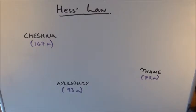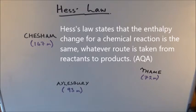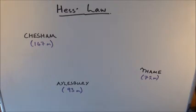For the exams, you must learn Hess's Law as defined by your own examination board. From an OCR textbook: Hess's Law states that if a reaction can take place by more than one route and the initial and final conditions are the same, the total enthalpy change is the same for each route. A good example is when a catalyst is used — a catalyst provides an alternative pathway with a lower activation energy, but the overall enthalpy change for the reaction doesn't change.